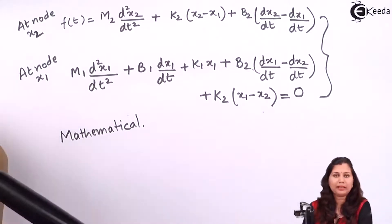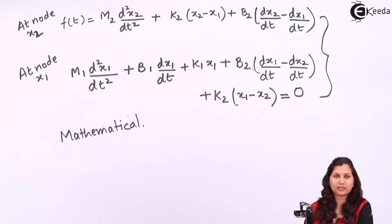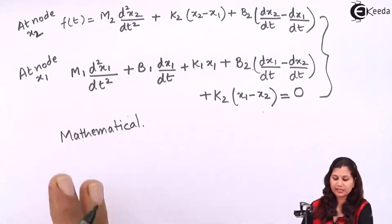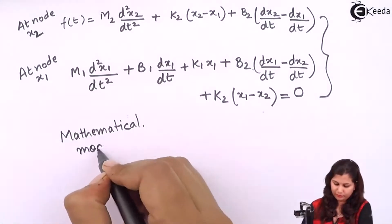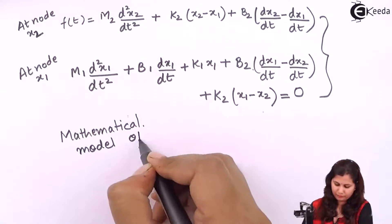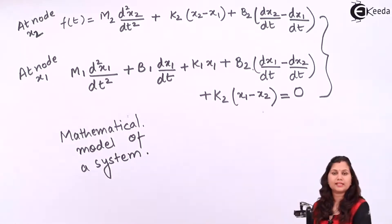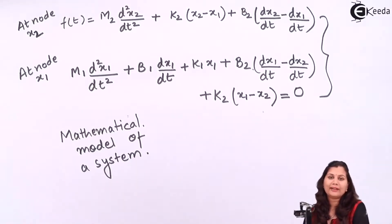The mathematical model is simply the mathematical representation of a system. These equations represent the mathematical model of the system. In this way we can determine the mathematical model of a system using the nodal method. I hope you have understood the topic. Thank you.